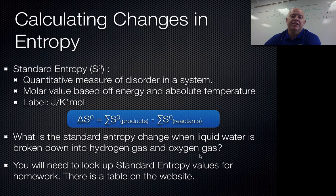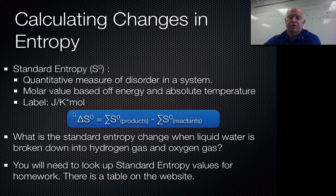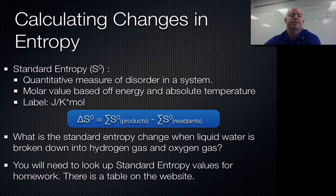When we want to calculate changes in entropy, the equation is the same as we used for enthalpy in thermodynamics: ΔS equals the sum of all products minus the sum of all reactants. The format is identical to the enthalpy calculation, just using S instead of H.